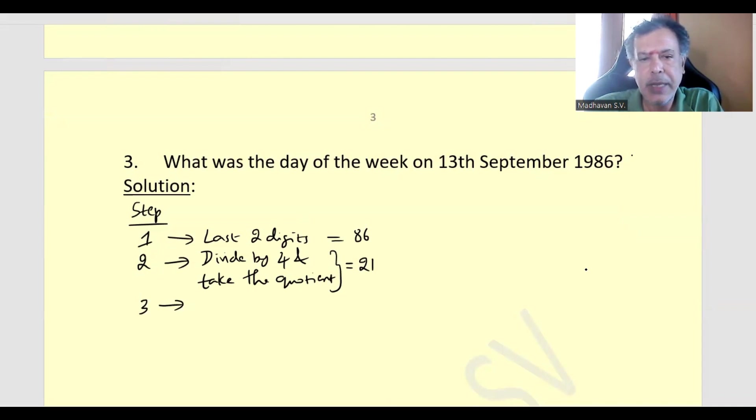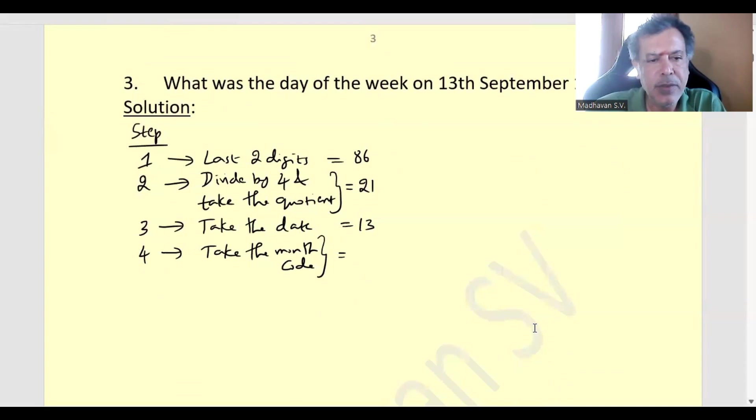Third step, we will take the date. Here it is 13. Then fourth step, we need to consider the month code. Then next step is we need to consider the year code. Then next step is we need to consider the total, divide by seven and find the remainder.